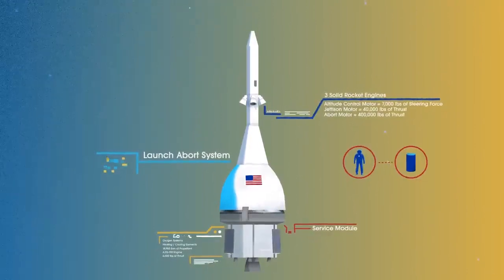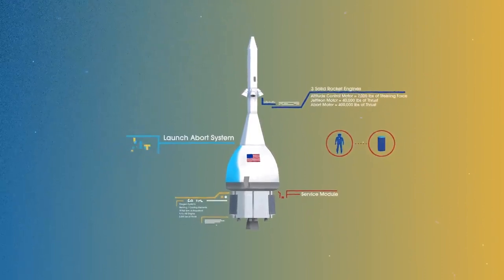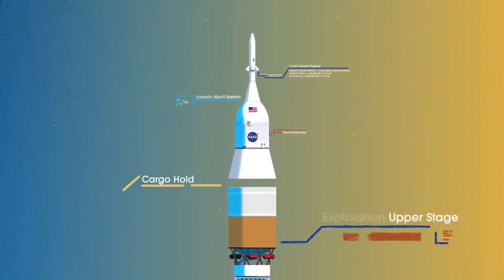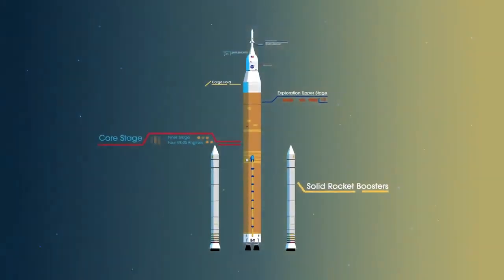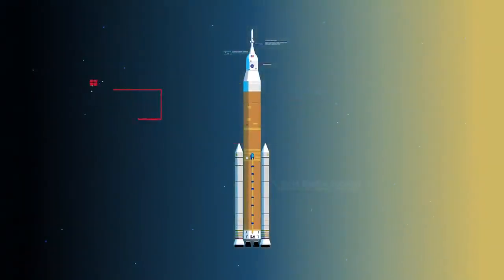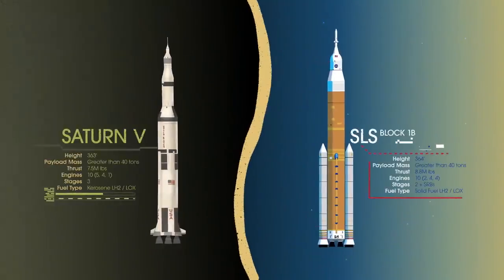To accomplish the task of launching our crew and heavy payloads, NASA is building the Space Launch System, comprising a cargo hold, an exploration upper stage, a massive core stage, and two extended solid rocket boosters. Altogether, this is the world's most powerful rocket, and it exceeds the legendary Saturn V of the Apollo era in numerous ways.